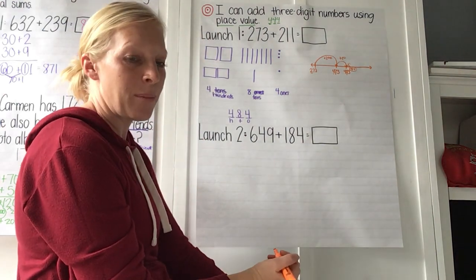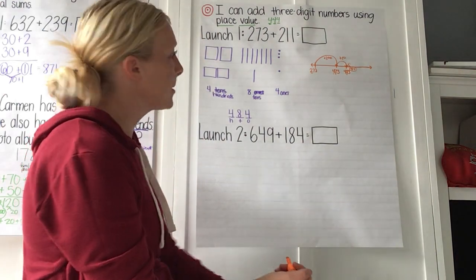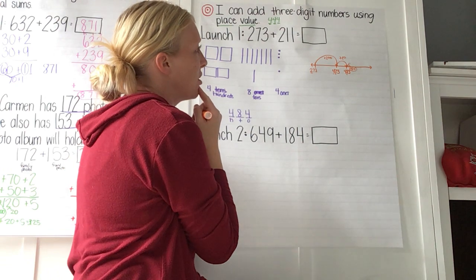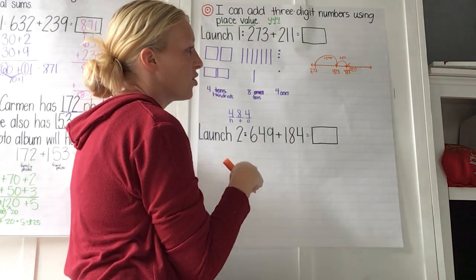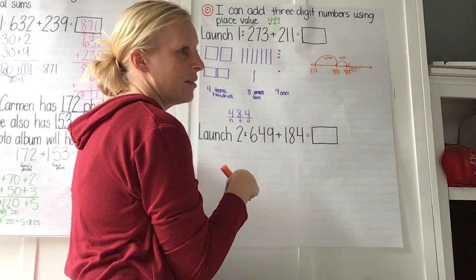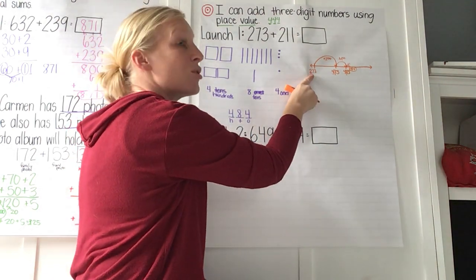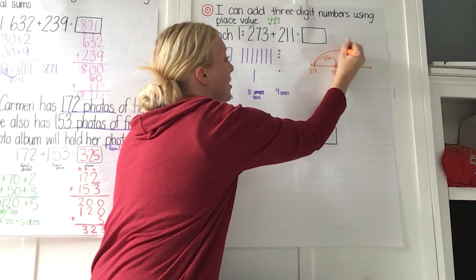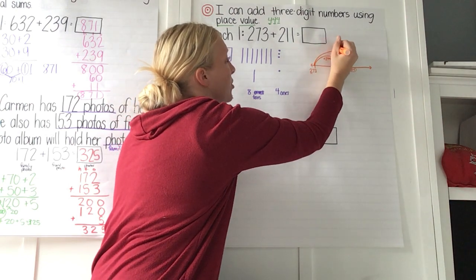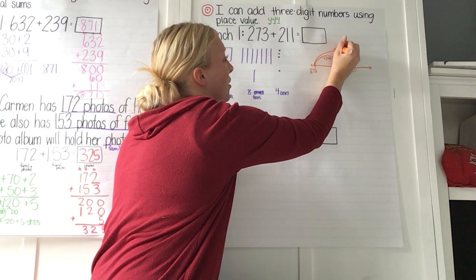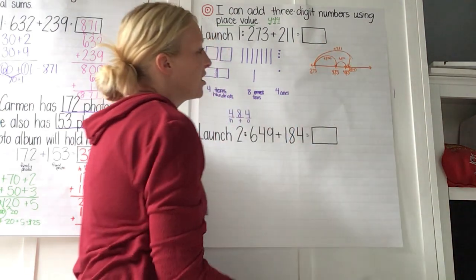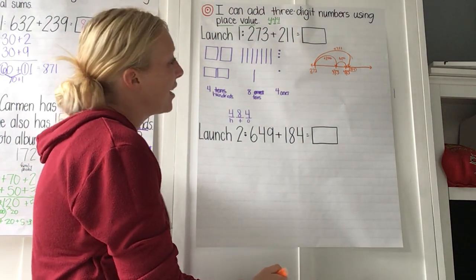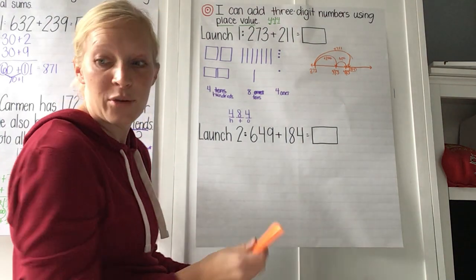What number did you decompose in this? Just your 211. And why just your 211? Because you started with 273, and if you had jumped it's too big. So you just have to break up that 211 when you're doing the number line instead of breaking up both numbers.